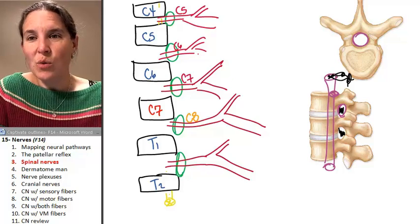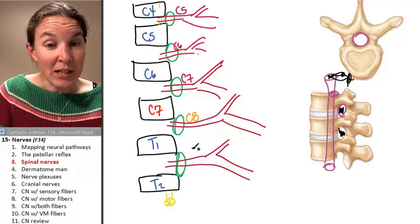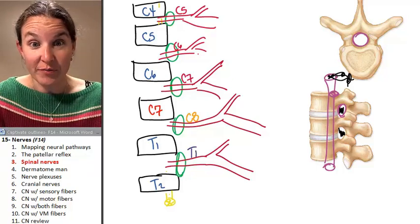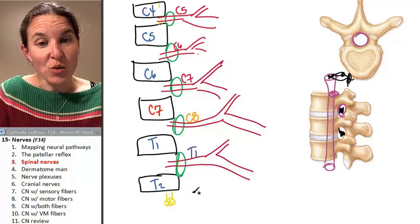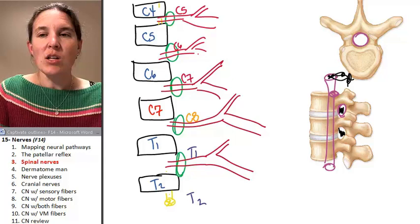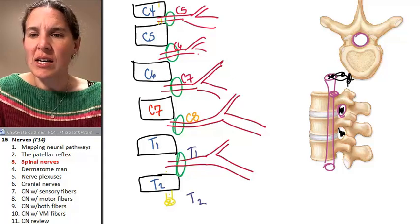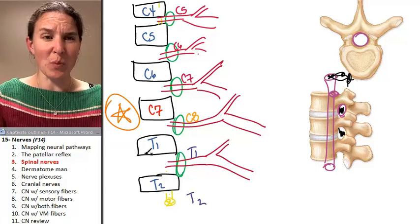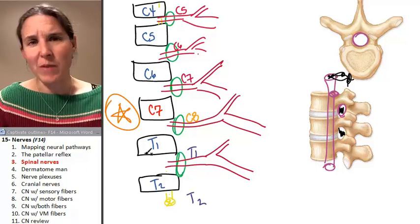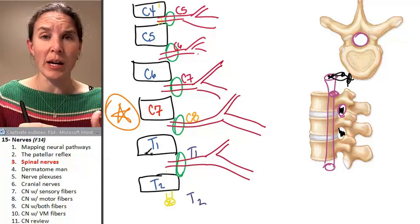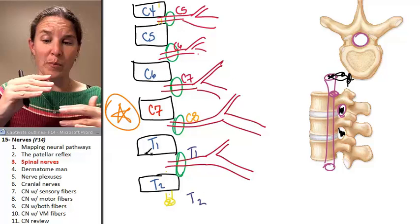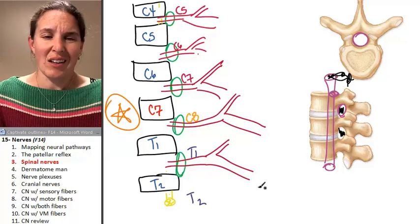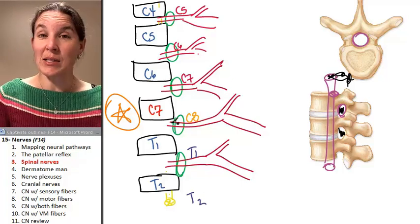So who's my next spinal nerve? We're back into, we're in a different pattern. This one is going to be inferior to T1 is the T1 spinal nerve. Inferior to T2 is which spinal nerve? T2. So C8 marks this very interesting place. C7 marks this very interesting place where we do a flip flop and we are no longer numbering for the vertebra below the spinal nerve. We're now numbering for the vertebra above the spinal nerve.